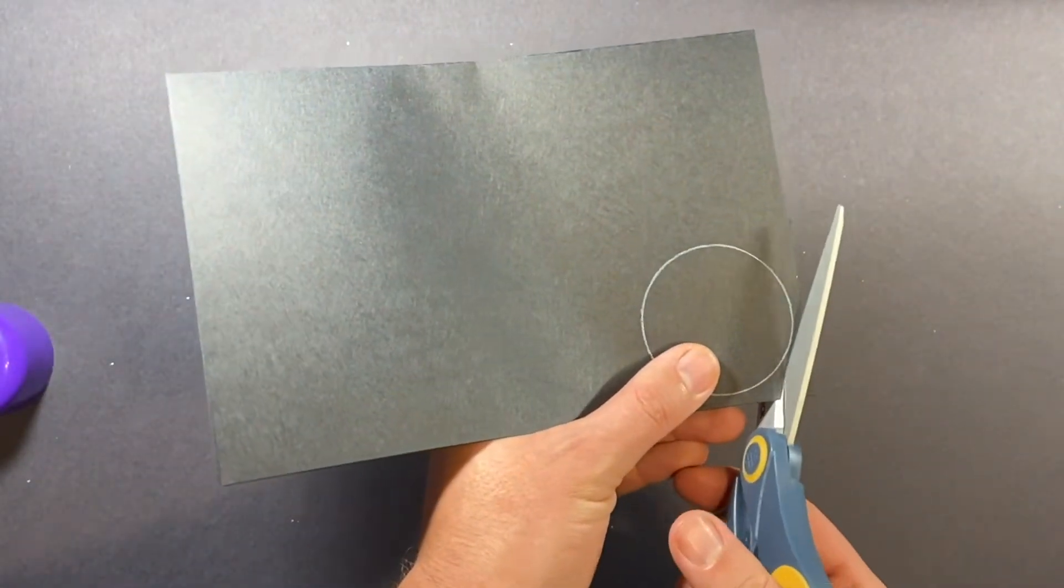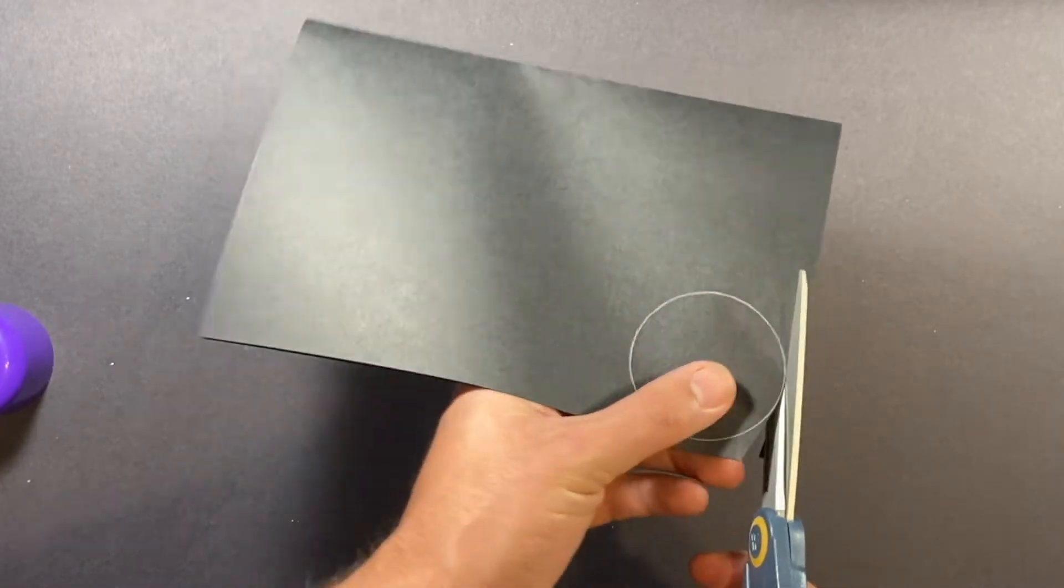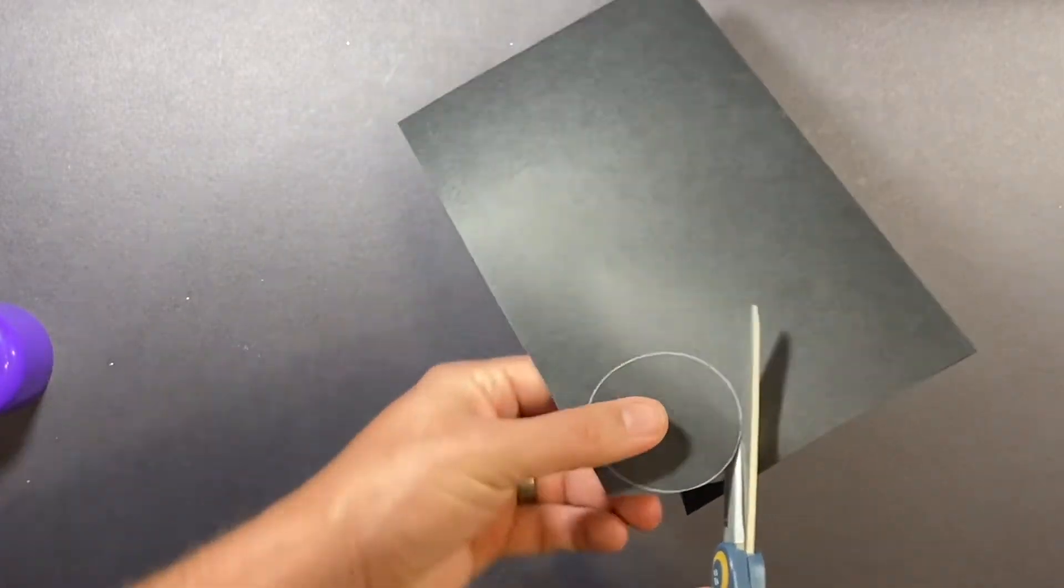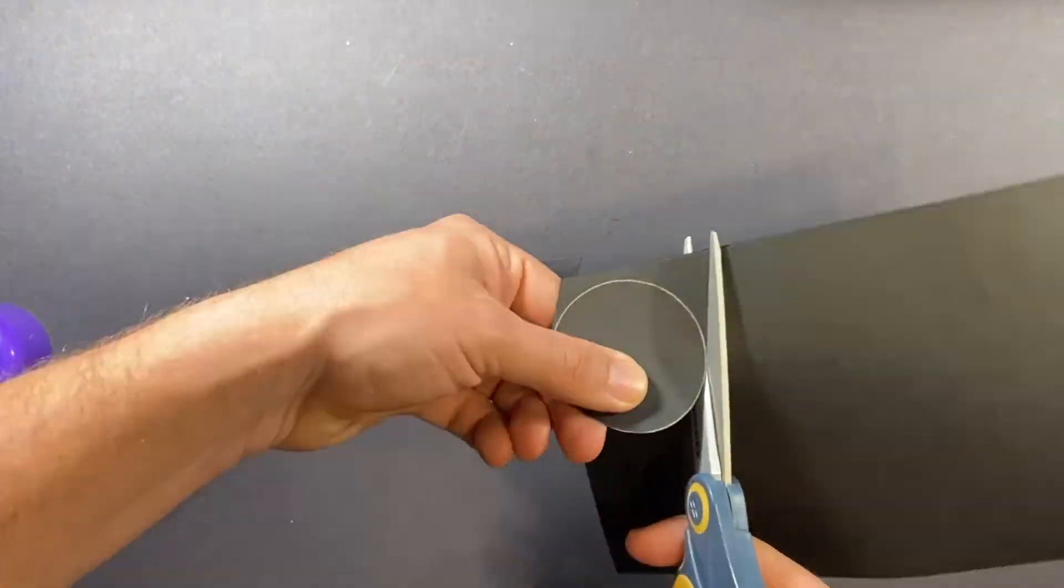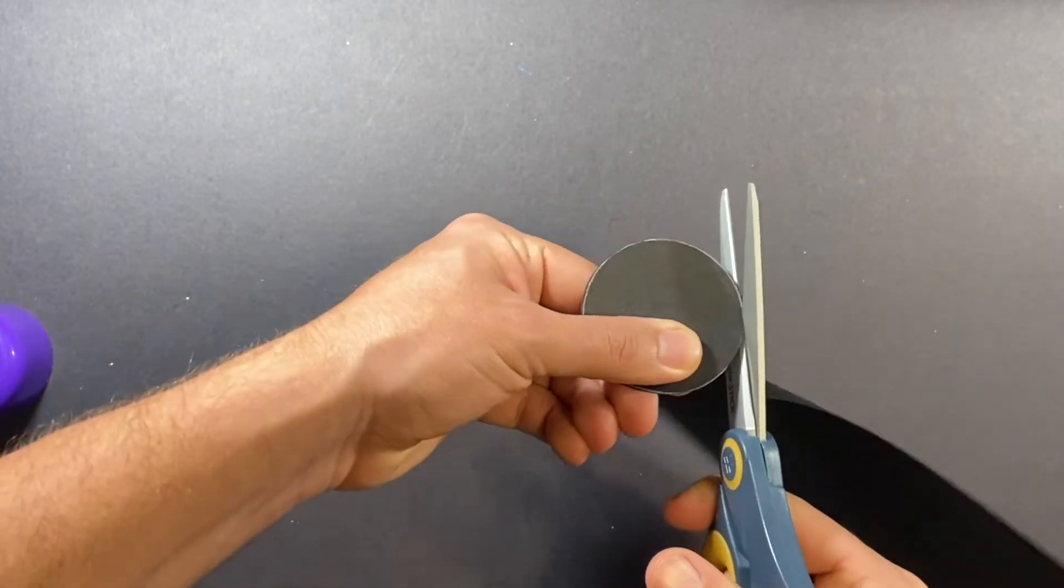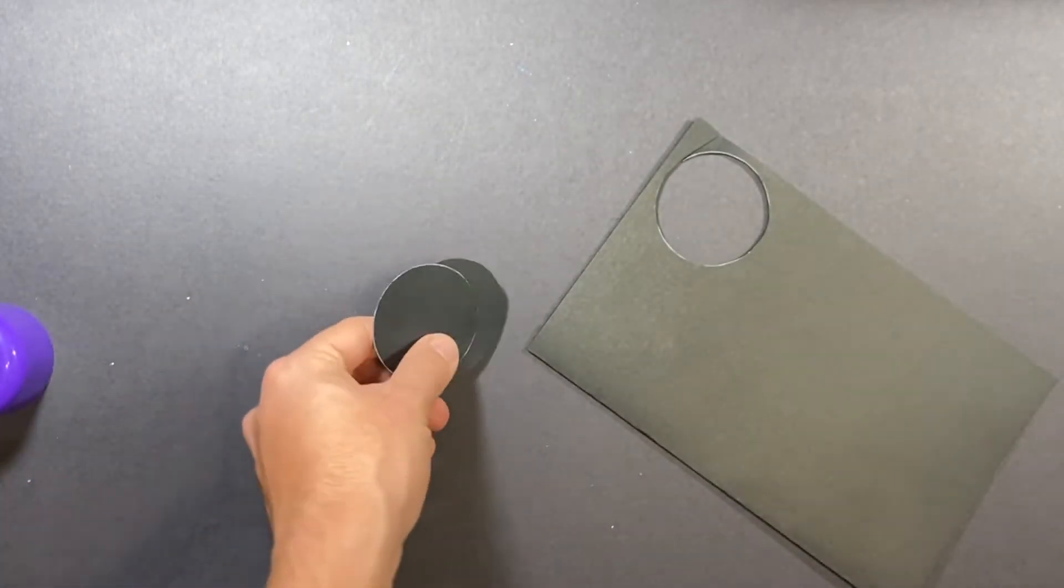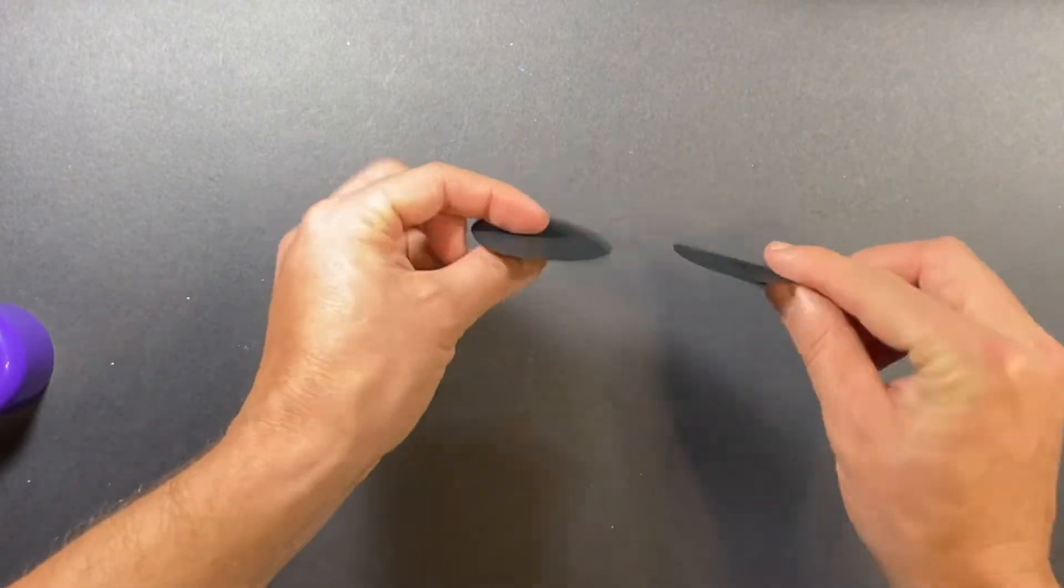And then, with the paper still folded, go ahead and give it a cut. Go all the way around the circle with excellent craftsmanship. Make sure you stay right on that line. And, oh yeah, you guessed it. We've got two identical black circles.